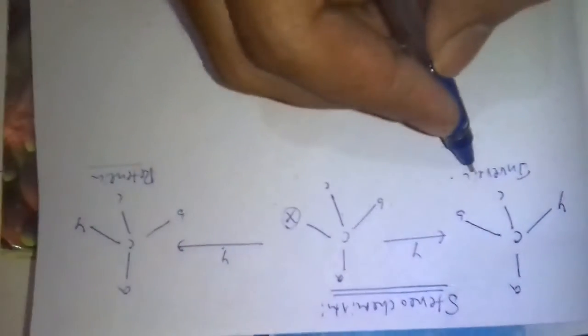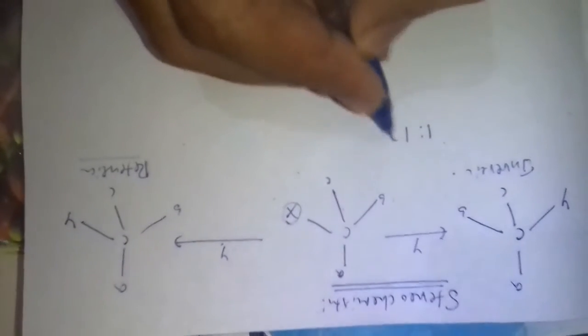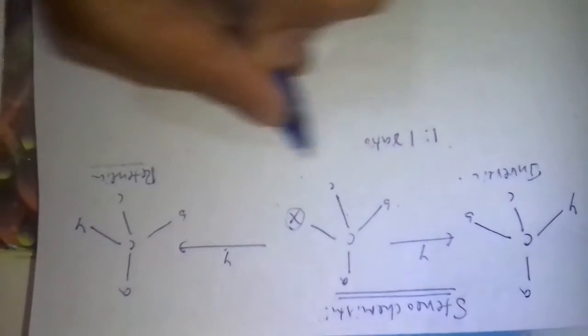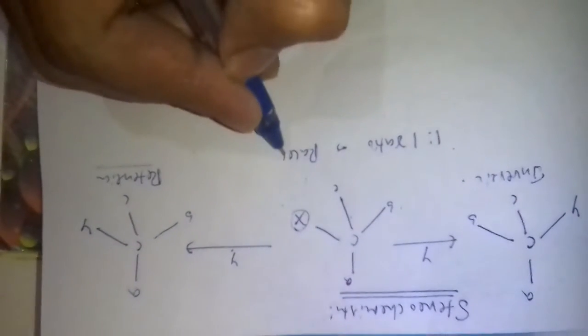If both inversion and retention takes place, if 1 is to 1 ratio, inversion and retention takes place, then it gives rise to racemic mixture.